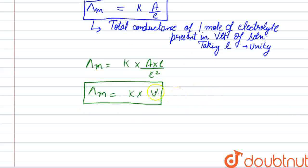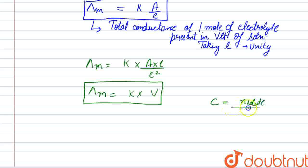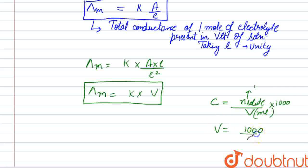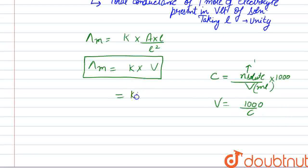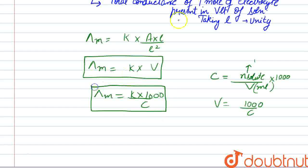We defined this for 1 mole of electrolyte. Writing it in terms of concentration: molarity C equals (number of moles of solute / volume) × 1000, where volume is in mL. Since number of moles is 1, we get V = 1000/C. Therefore, λM = 1000K/C. Here C is the concentration in terms of molarity.